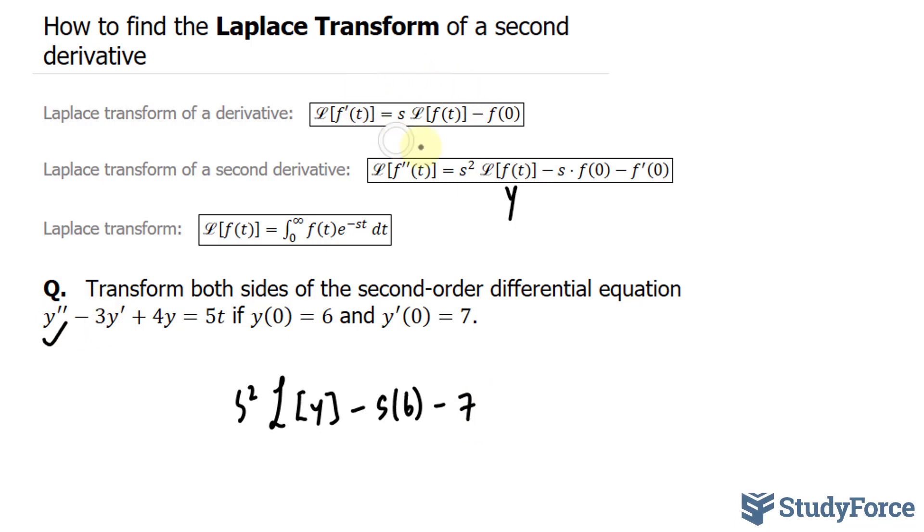For that I'll use this relationship where the Laplace transform of y' equals the following. So we have -3 times (s times the Laplace transform of y minus f(0), which is 6).